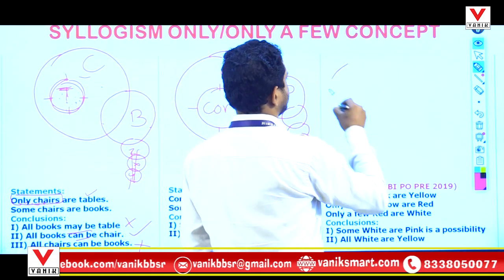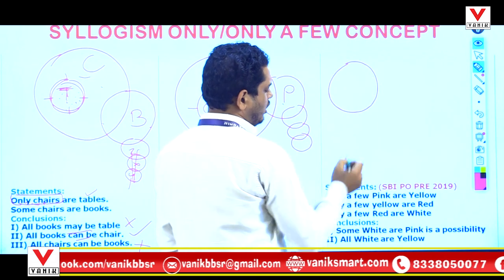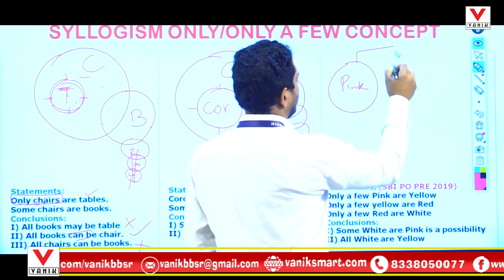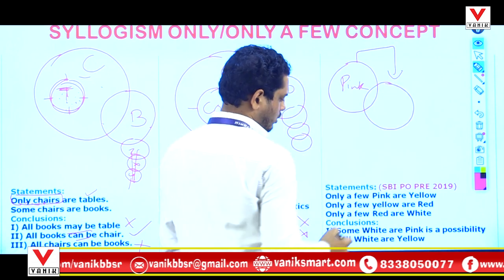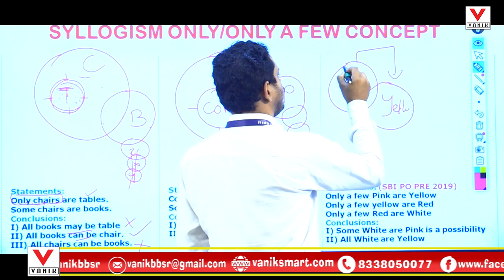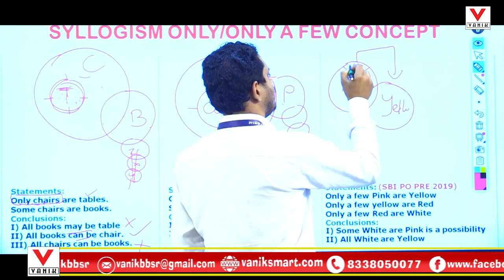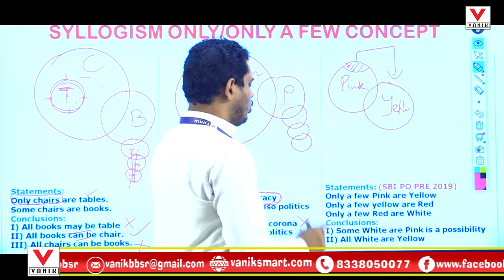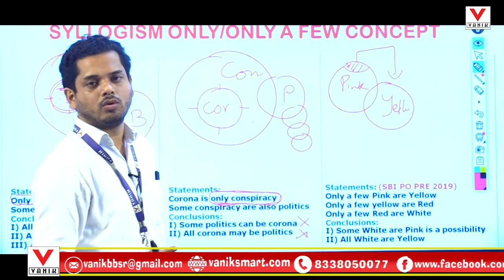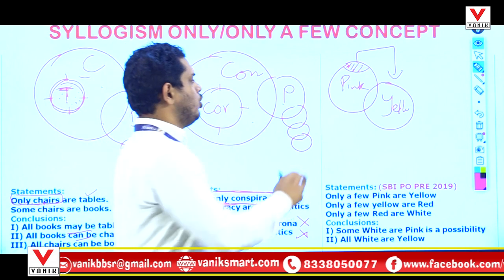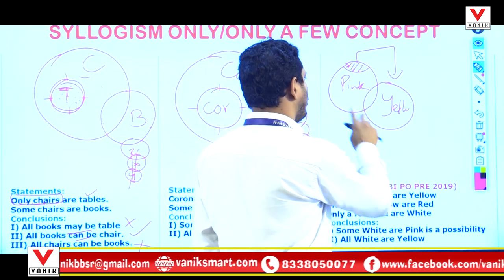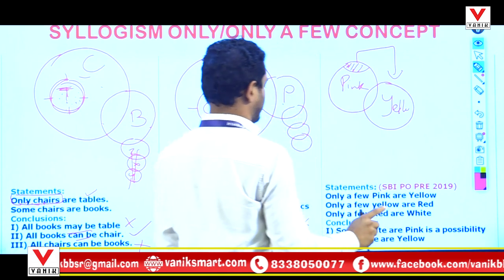Only a few concept — this is a bit different. Only a few pink are yellow. What this means: only a few part of pink are yellow, but not all part of pink are yellow. This is the ultimate conclusion — all part of pink, we cannot be the part of yellow. We cannot make all pink within yellow. This is clear.